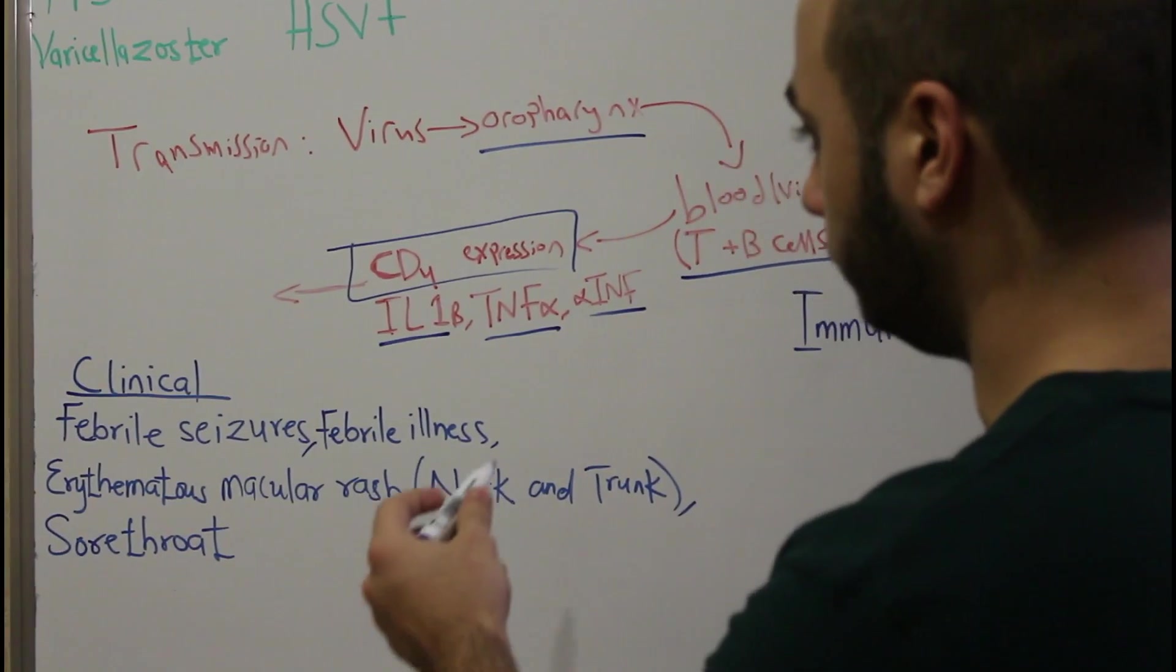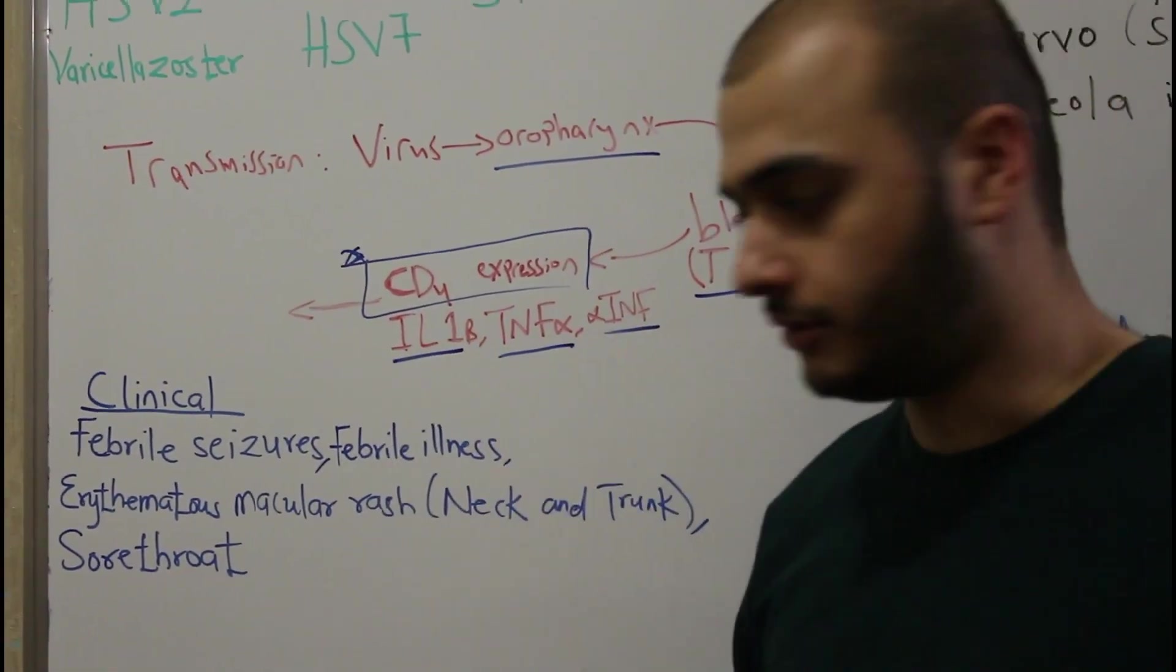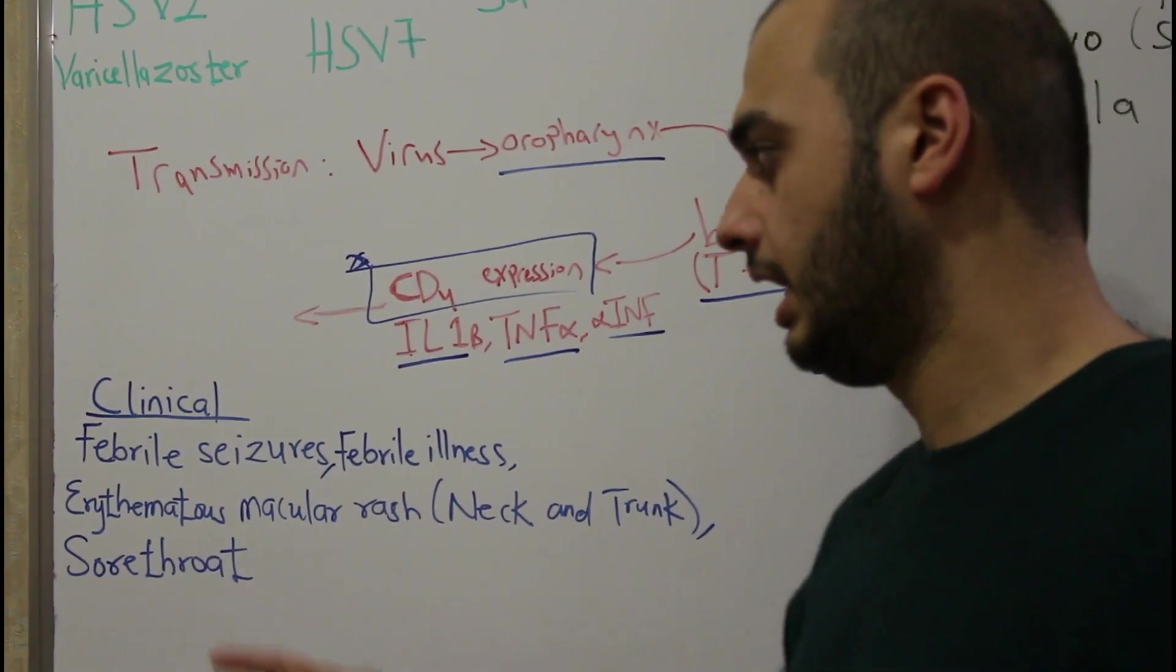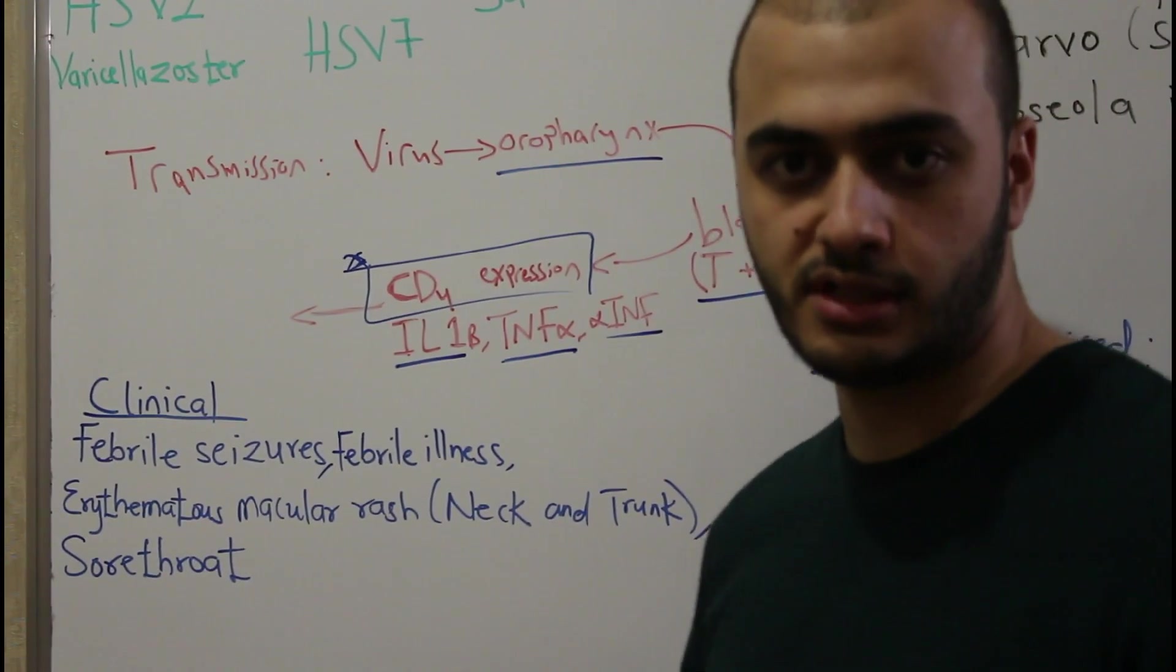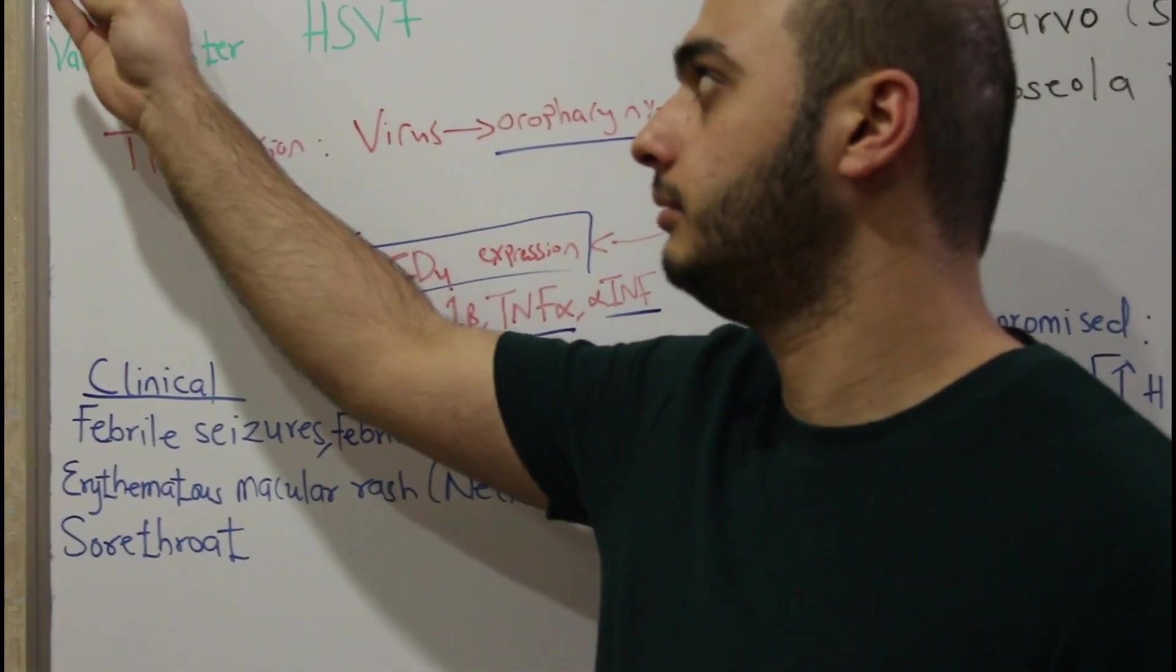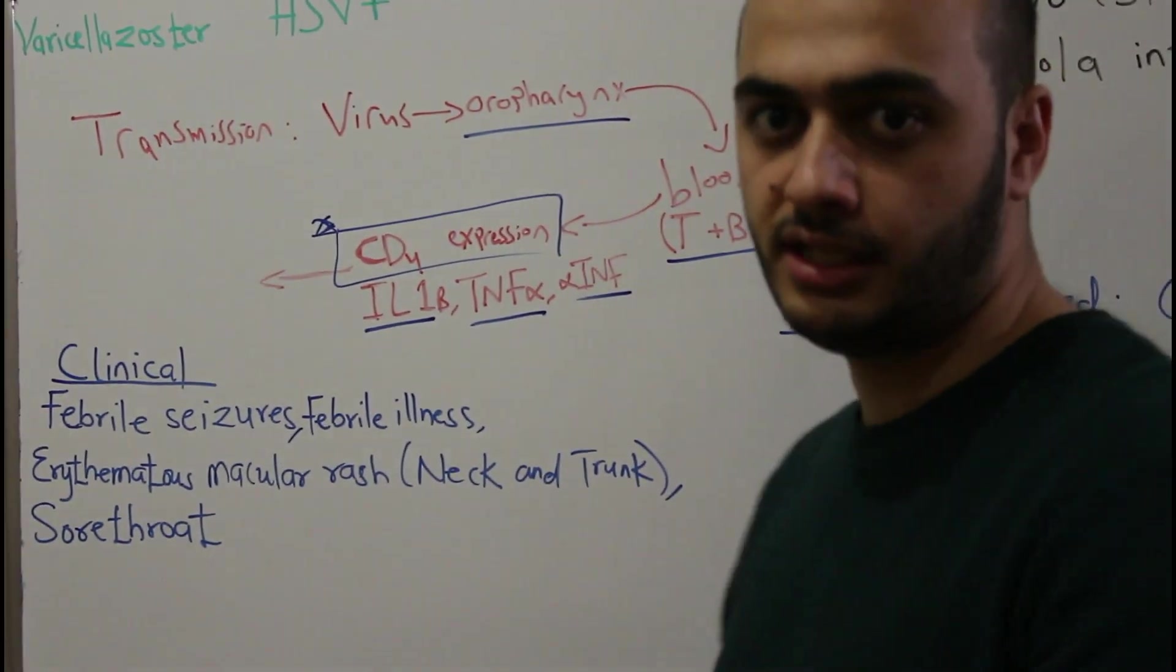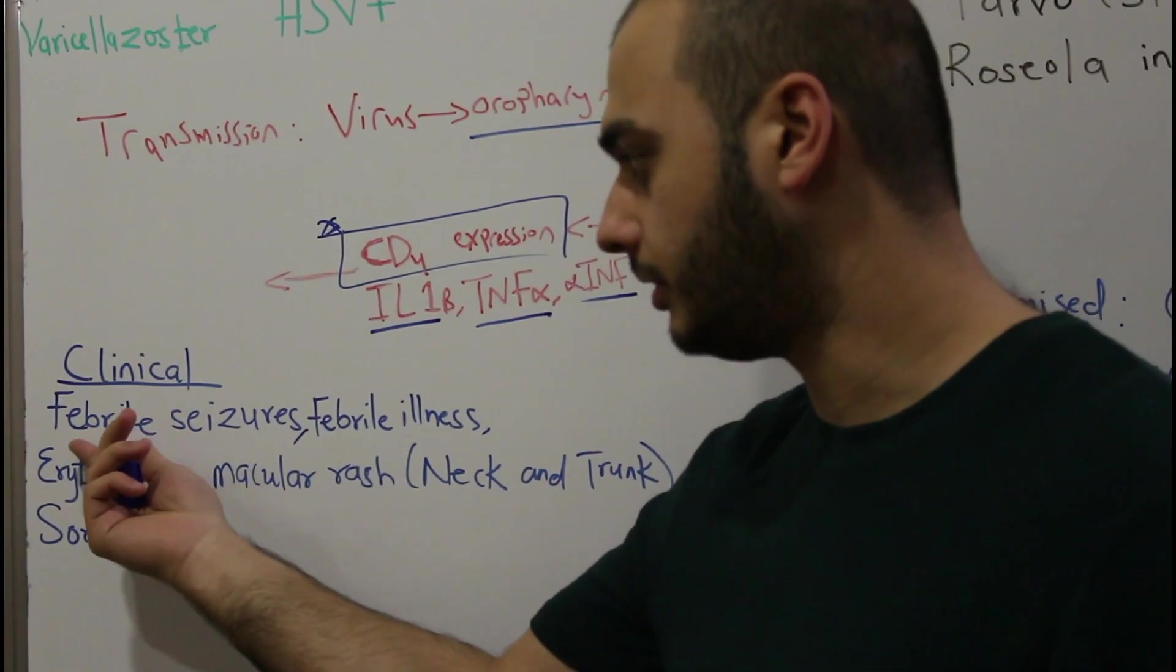Clinically, what do we see in normal children? This virus is a latent virus—once you're infected it's for life, same with cytomegalovirus and all the herpes virus family. There's primary infection and secondary reactivation. Primary infection is characterized by febrile seizures.